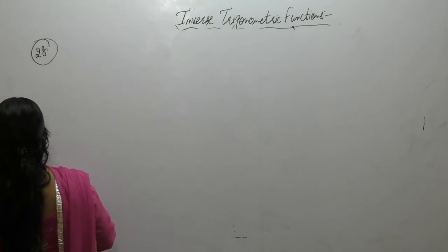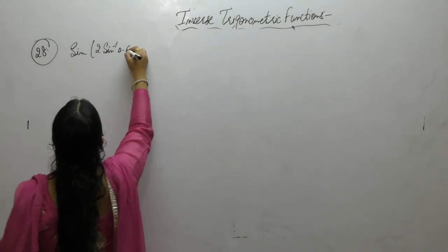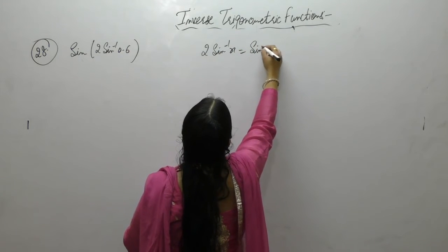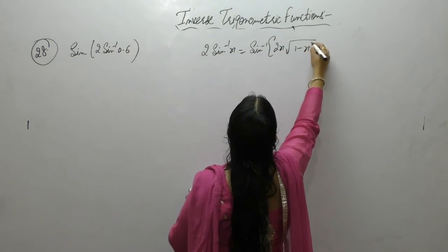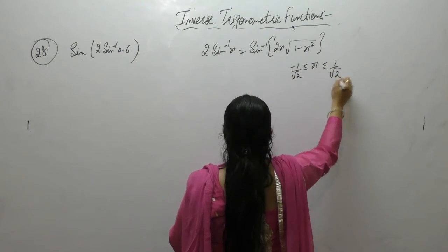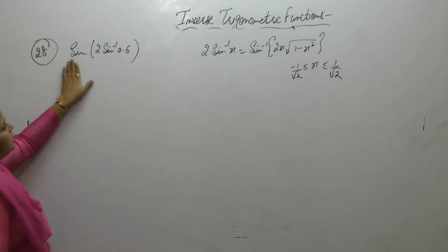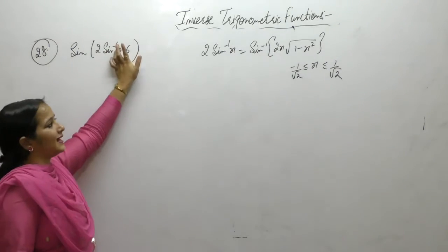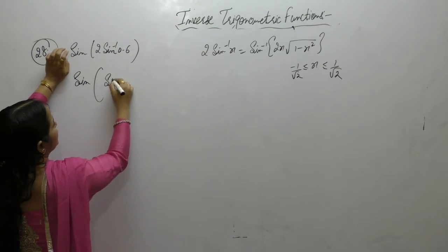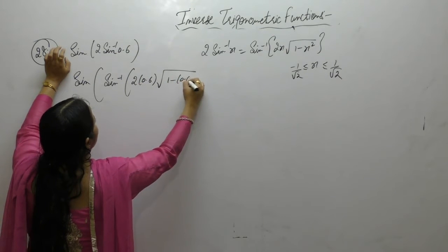Evaluate sin(2sin⁻¹(0.6)). The formula is: 2sin⁻¹x = sin⁻¹(2x√(1-x²)), where x lies between -1/√2 and 1/√2.